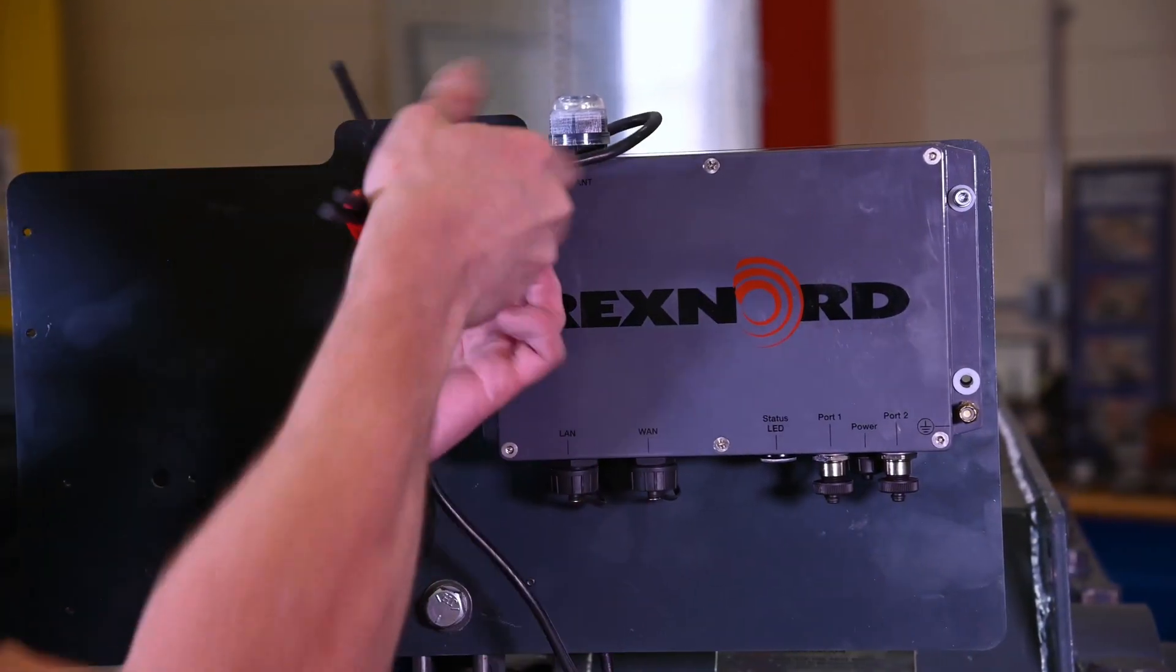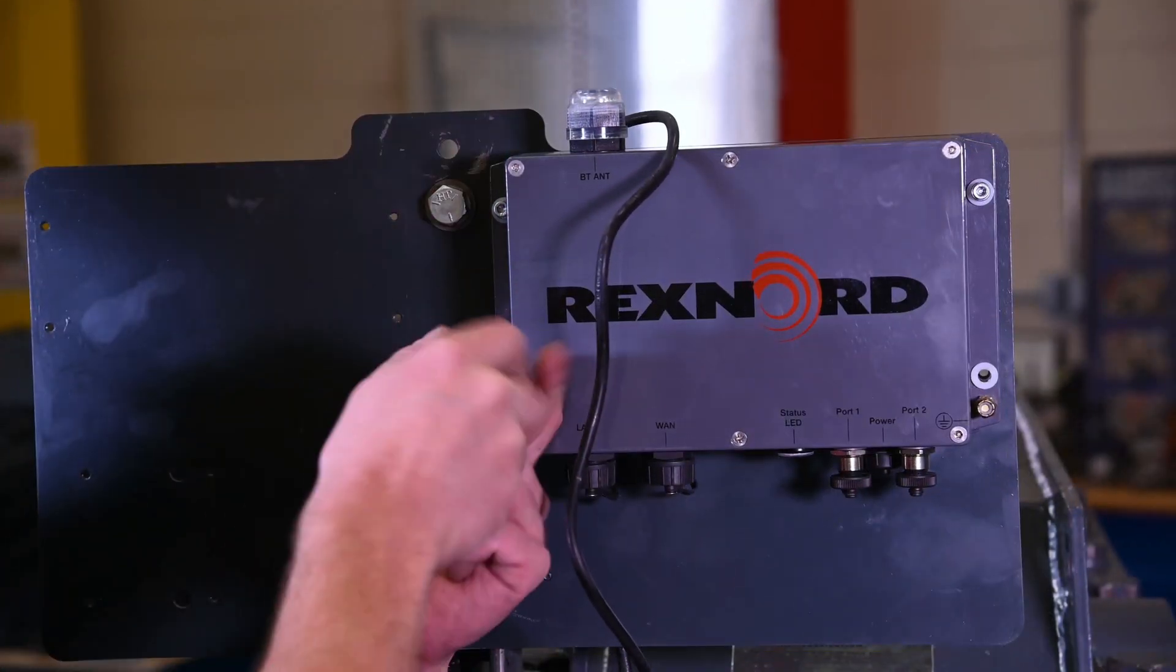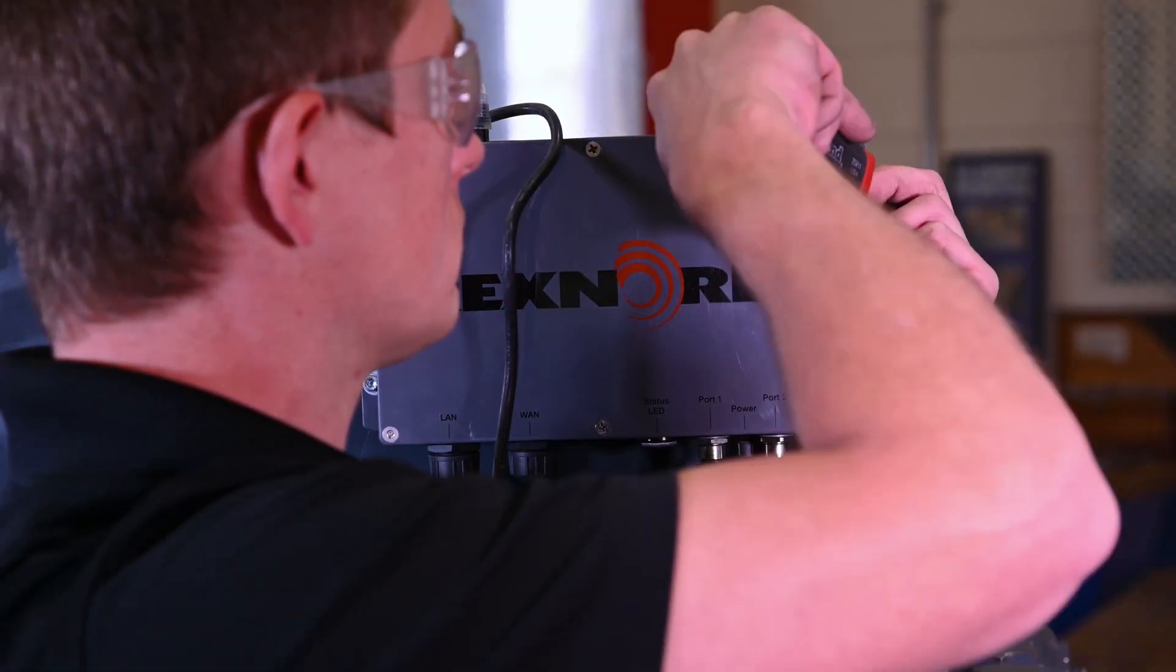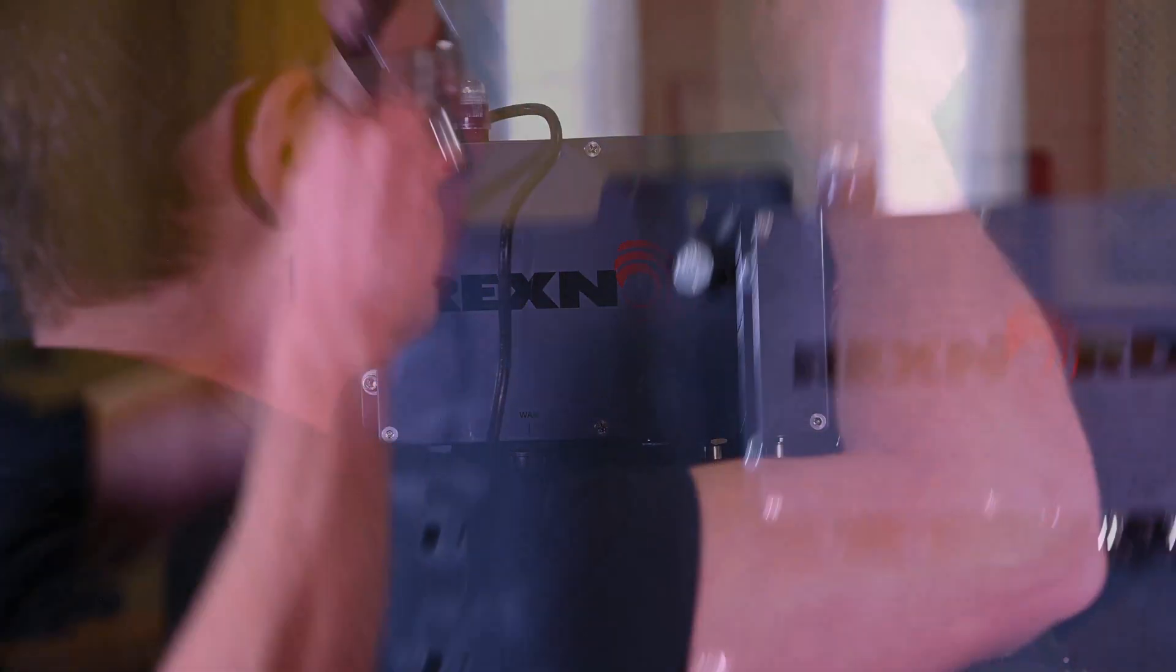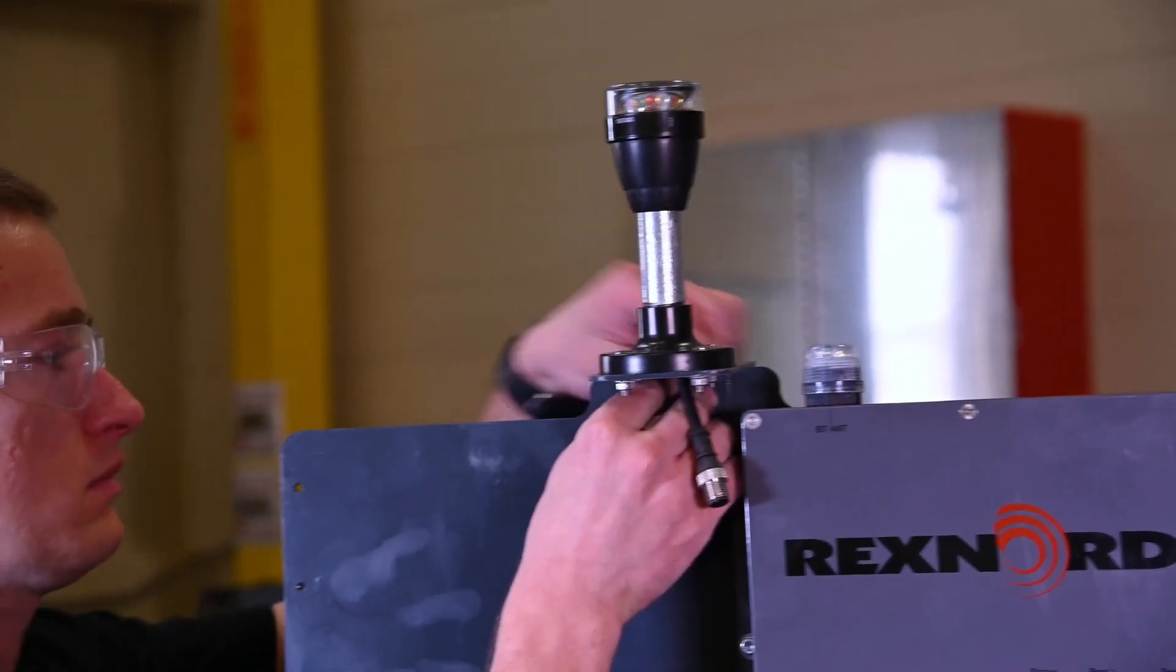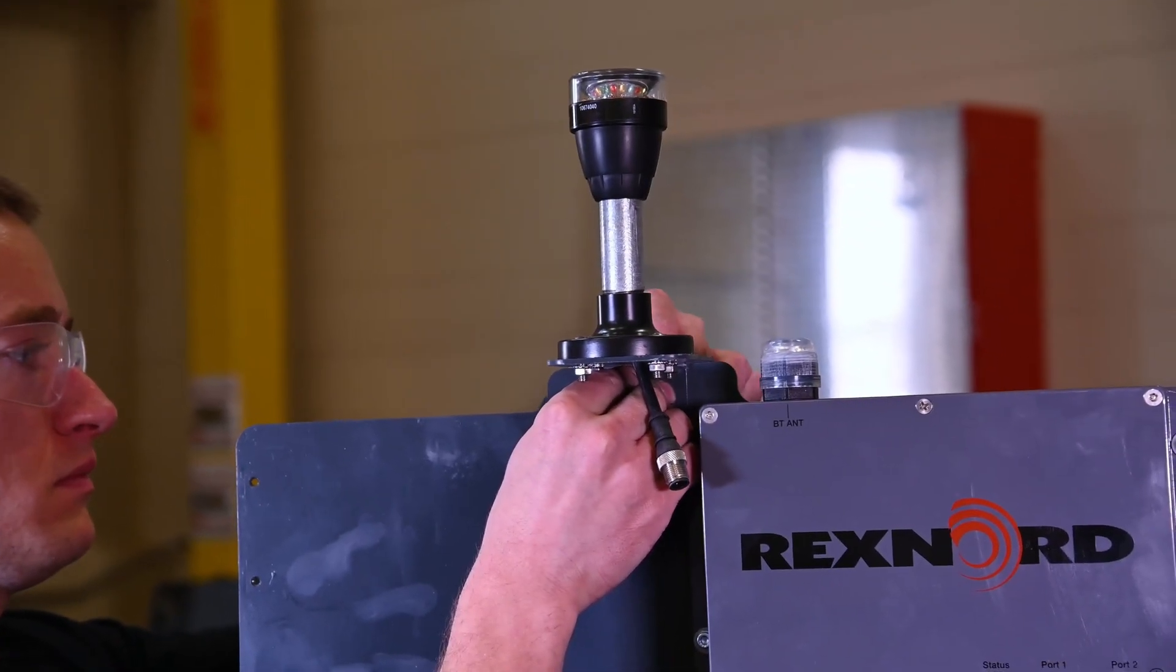Secure the edge to the mounting bracket using the provided number 12 hardware. Attach the Andon light assembly using the 5/16 inch bolt and lock nut.